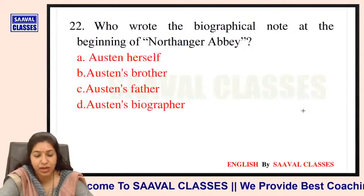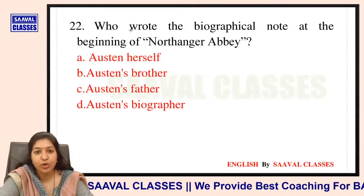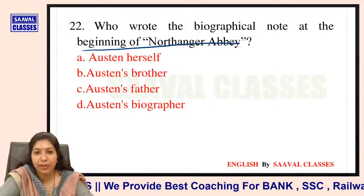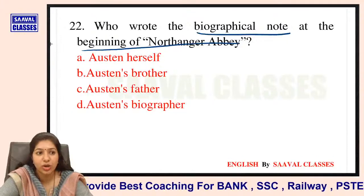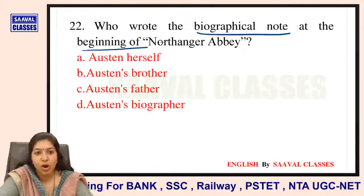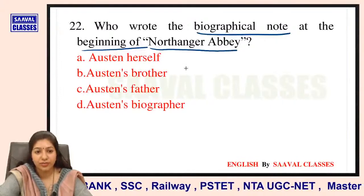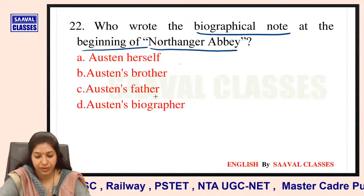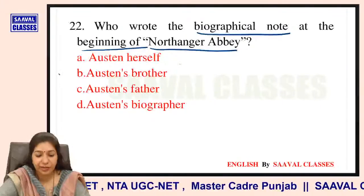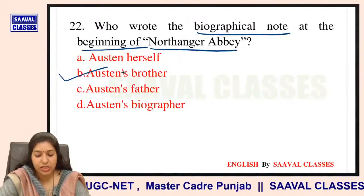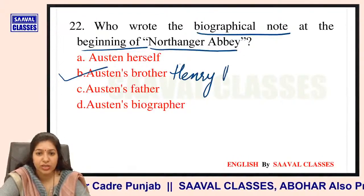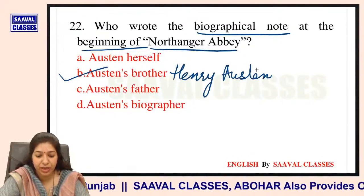Question number 22: Who wrote the biographical note at the beginning of Northanger Abbey? Options are Austen herself, Austen's brother, Austen's father, ya Austen's biographer? It was Austen's brother — Henry Austen — jiska maine aapko abhi bataya. Henry Austen ne likha tha biographical note.